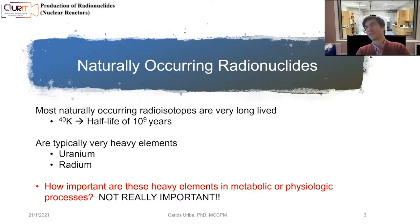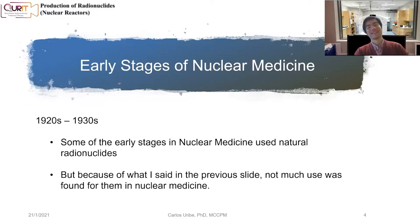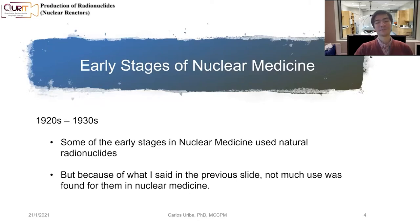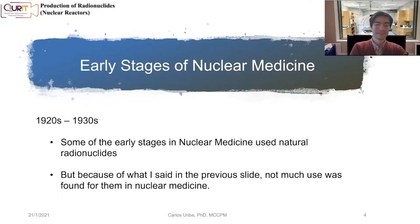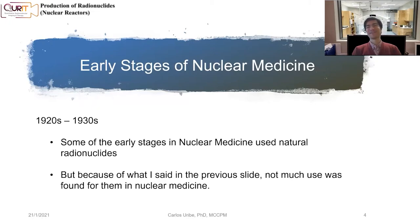These elements, for what our body needs, are not really very important. Back in the early days, in the 1920s and 1930s, in the early stages of nuclear medicine, they started trying to use some of these natural radionuclides. But because these heavy elements aren't important to the body's metabolism, there was not much use in nuclear medicine for these radioisotopes.